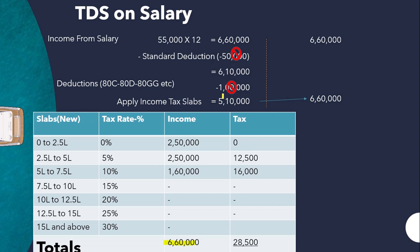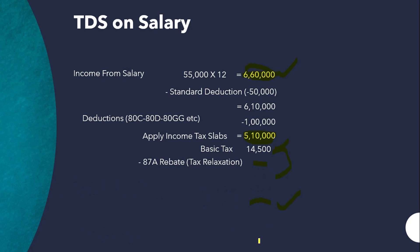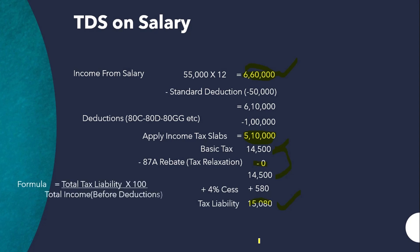Under the new income tax slabs, the rates are: 0% up to ₹2.5 lakhs, 5% from ₹2.5L to ₹5L, 10% from ₹5L to ₹7.5L, 15% from ₹7.5L to ₹10L. On ₹6,60,000, the total tax under new slabs is approximately ₹28,000. It is up to you whether to opt for the old or new tax regime. Under the old regime, the TDS average rate is 2.28%.